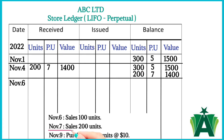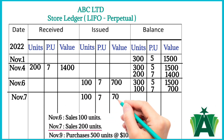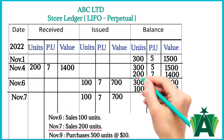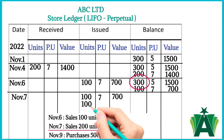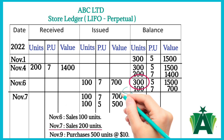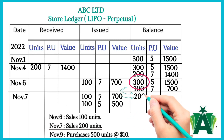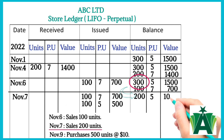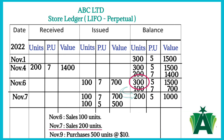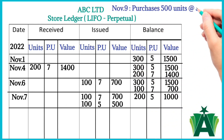November 7th: sales of 200 units. First, 100 units will be issued at $7 per unit, and the remaining 100 units will be issued out of the 300 units at $5 per unit. The remaining 200 units will be recorded in the balance column at $5 per unit, with a total value of $1,000.